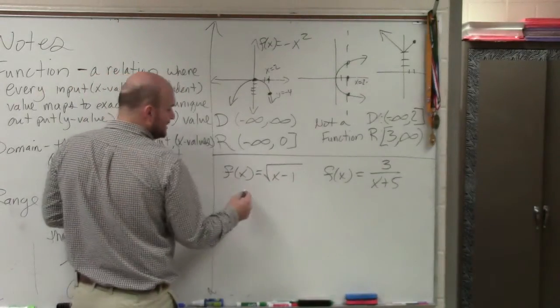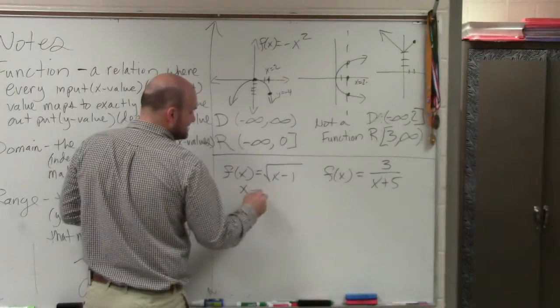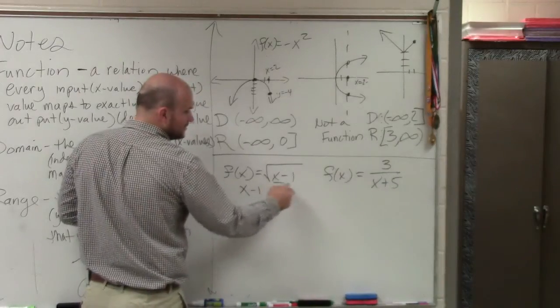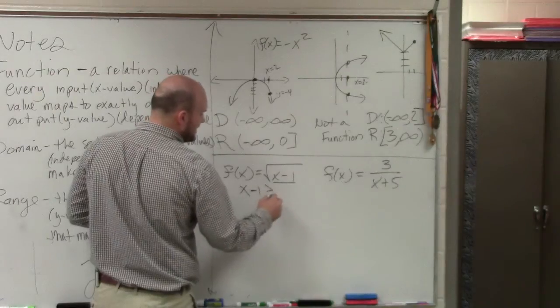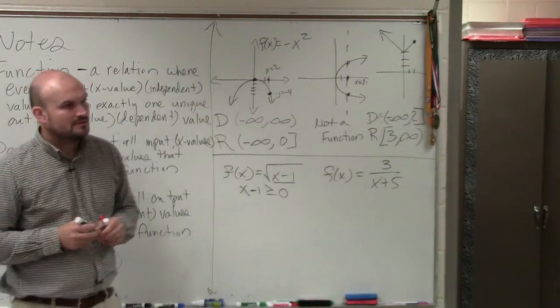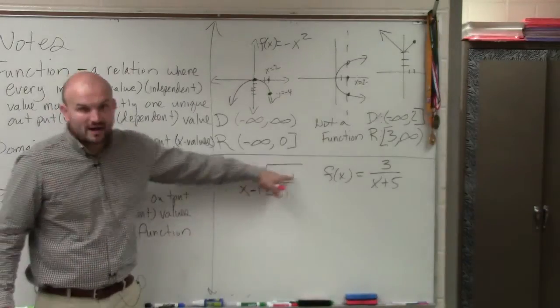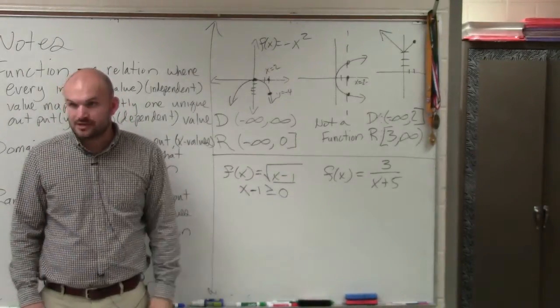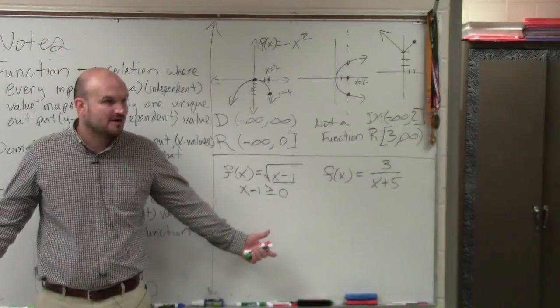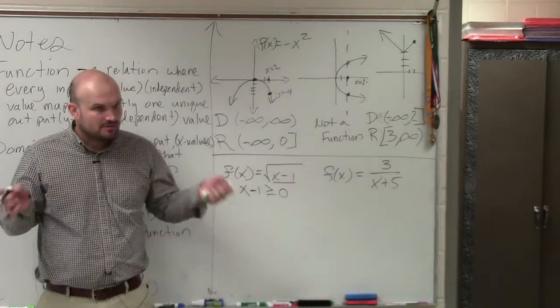So what I like to do is what we'll do to determine our domain. Anytime you have a radical, you're going to be x minus 1. You take whatever you take your quantity, and you say it has to be greater than or equal to 0. Do you guys agree with me? Whatever is inside of this has to be greater than or equal to 0. Right? You can't take the square root of a negative number. You're going to get imaginary numbers.